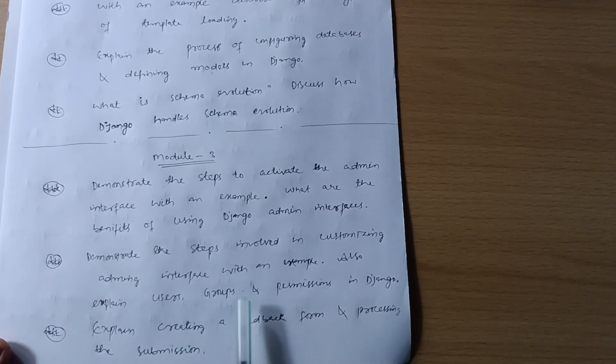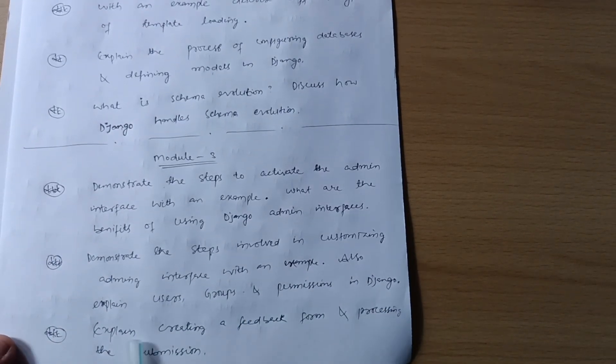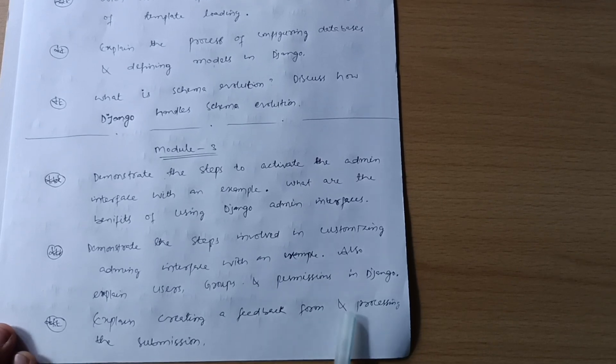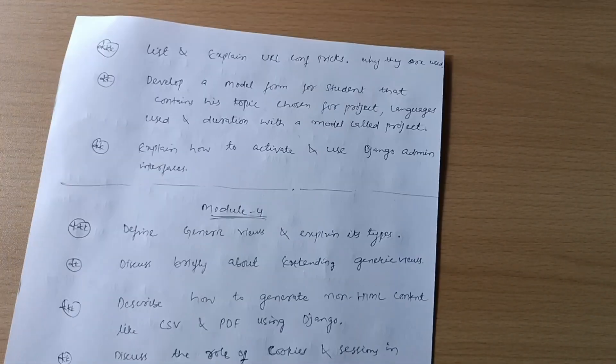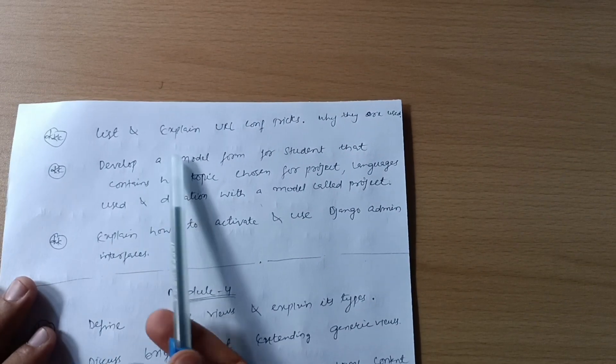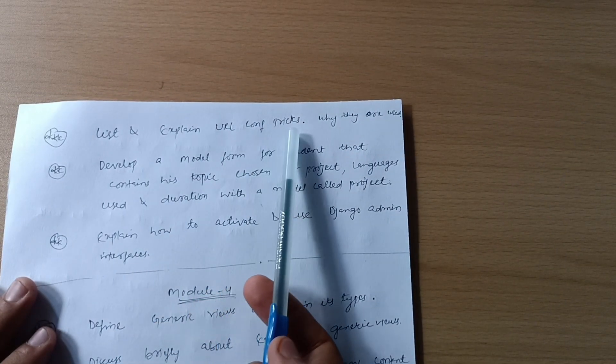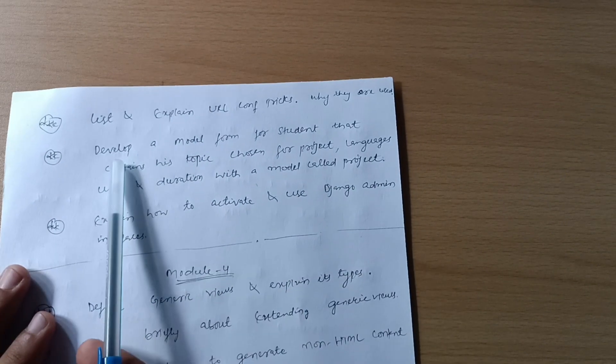Also explain users, groups, and permissions in Django. Explain creating a feedback form and processing the submission. Next, we have three questions from Module 3. List and explain URL configuration tricks and why they are used.